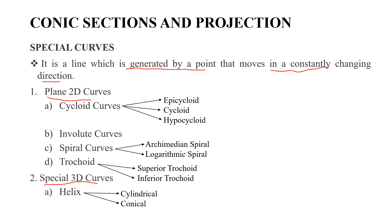The first type of special curve is cycloid curves, which include epicycloid, cycloid, and hypocycloid. The second type is involute curves and the third type is spiral curves.